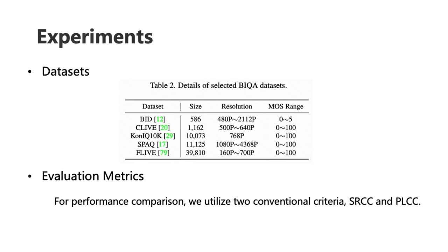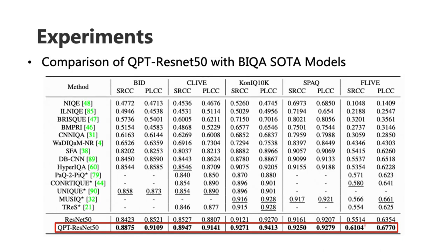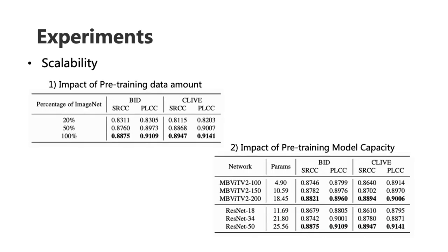We evaluate our method on five popular BIQA datasets, including KONIQ and IQA, SPAQ et al. Two conventional criteria, SRCC and PLCC, are employed. We can observe that our method pushes the current SOTA results a big step forward on all five datasets. Notably, these results are achieved using an ordinary ResNet-50 without bells and whistles. Like MoCo, QPT is scalable — here are two tables showing that performance on BID and CLIVE can be improved further with bigger model capacity and more pre-training data.